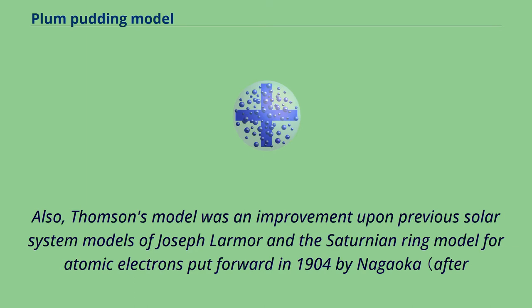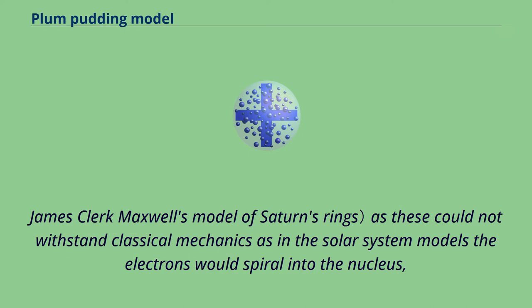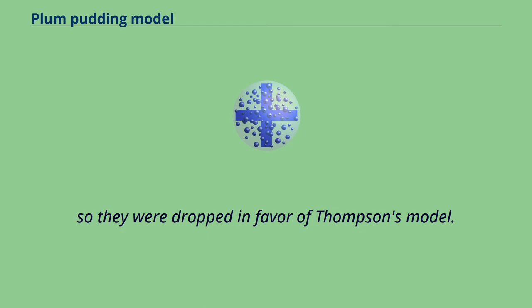Thomson's model was an improvement upon previous solar system models of Joseph Larmor and the Saturnian ring model for atomic electrons put forward in 1904 by Nagaoka, after James Clerk Maxwell's model of Saturn's rings. These models could not withstand classical mechanics — in the solar system models, the electrons would spiral into the nucleus — so they were dropped in favor of Thomson's model.